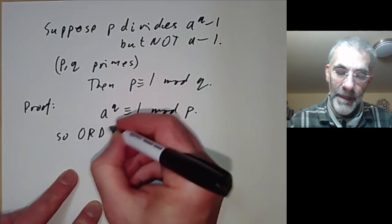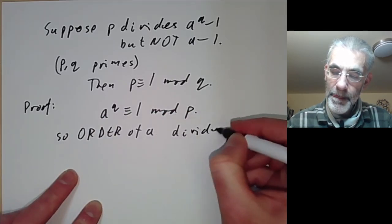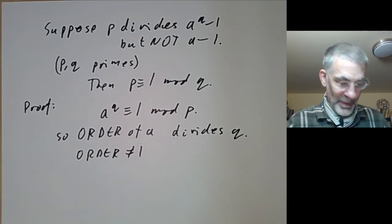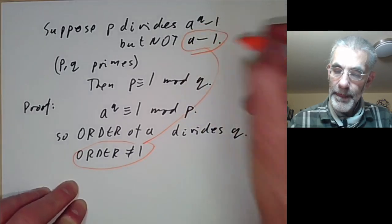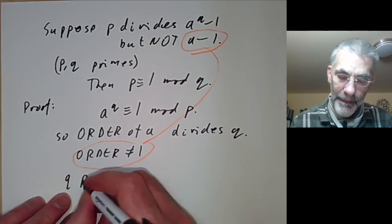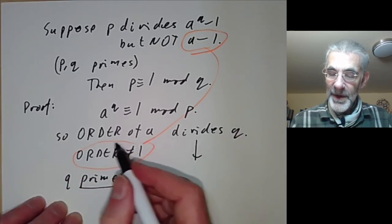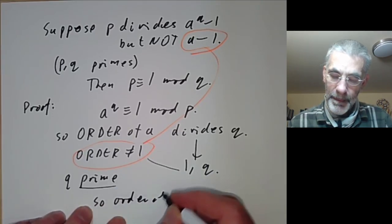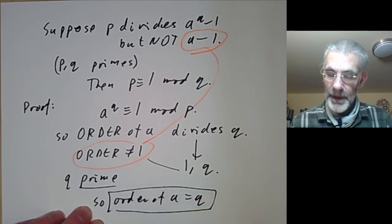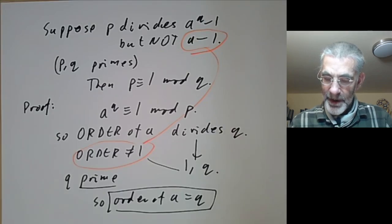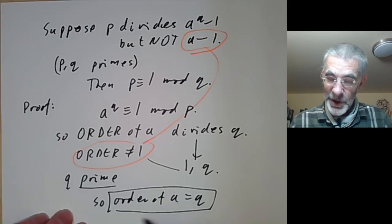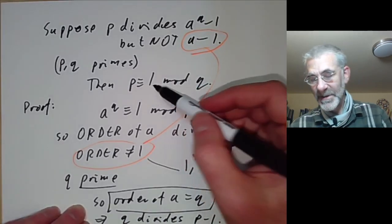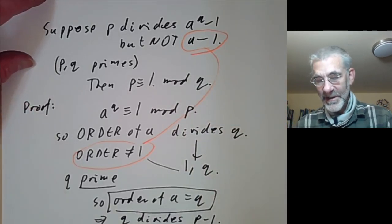This is easy to show. Since a to the q is congruent to 1 modulo p, the order of a divides q. On the other hand, the order is not equal to 1, because p does not divide a minus 1. Since q is prime, the order of a must be 1 or q — and since it isn't 1, it must be q. Since the order of a equals q, this implies q divides p-1, which is the same as saying p is congruent to 1 mod q, since any element's order must divide p-1.